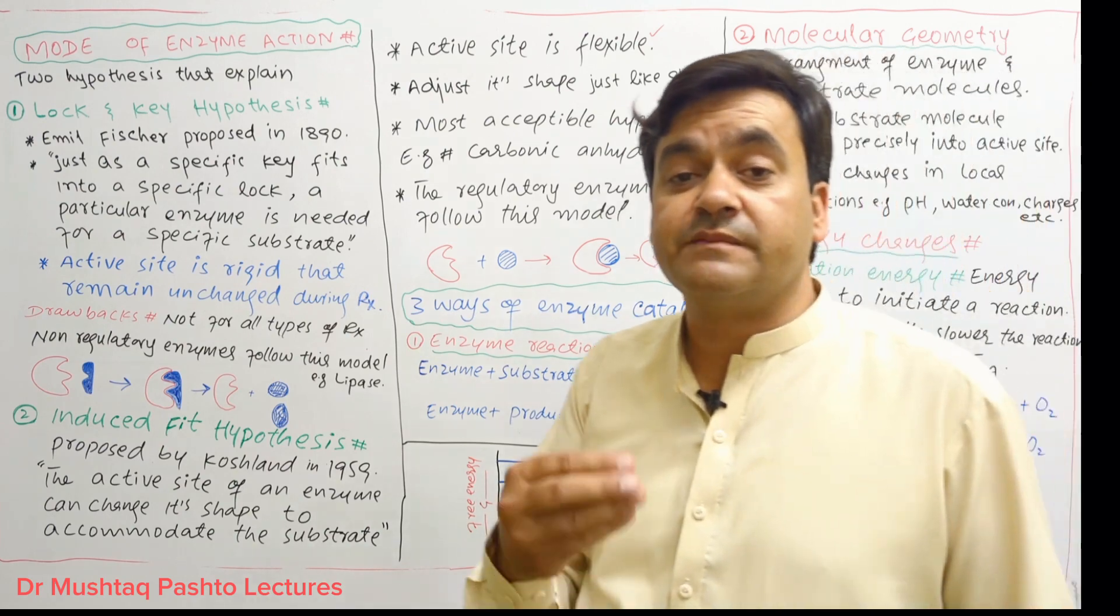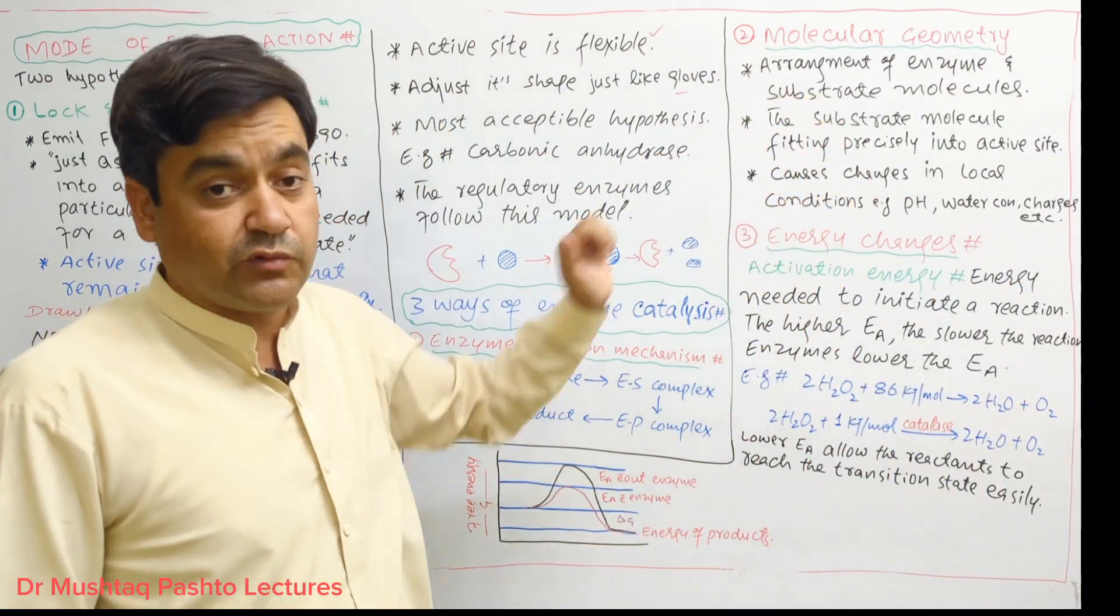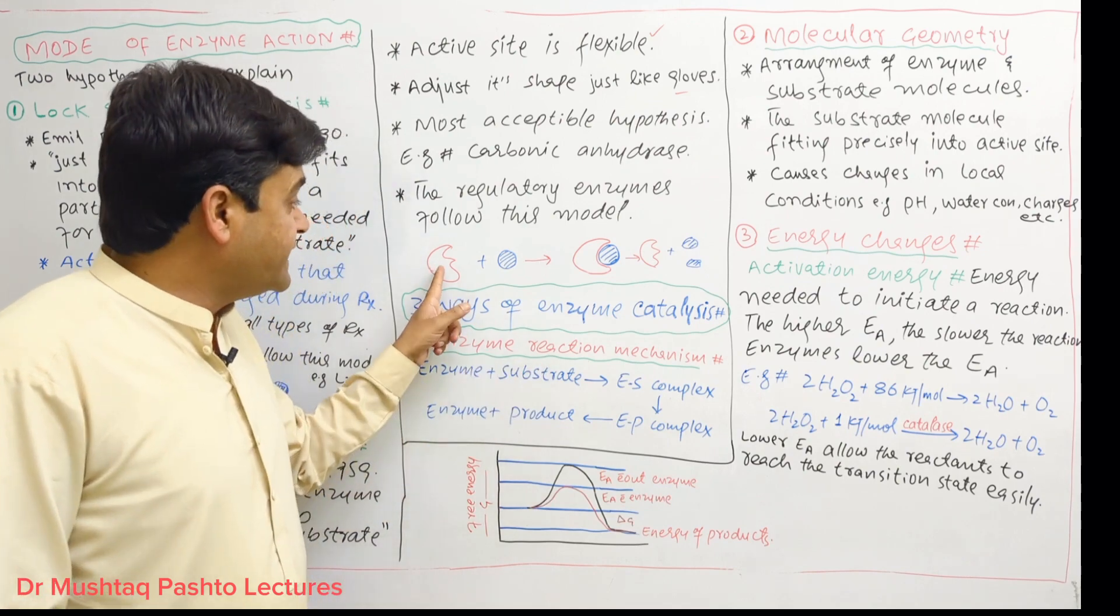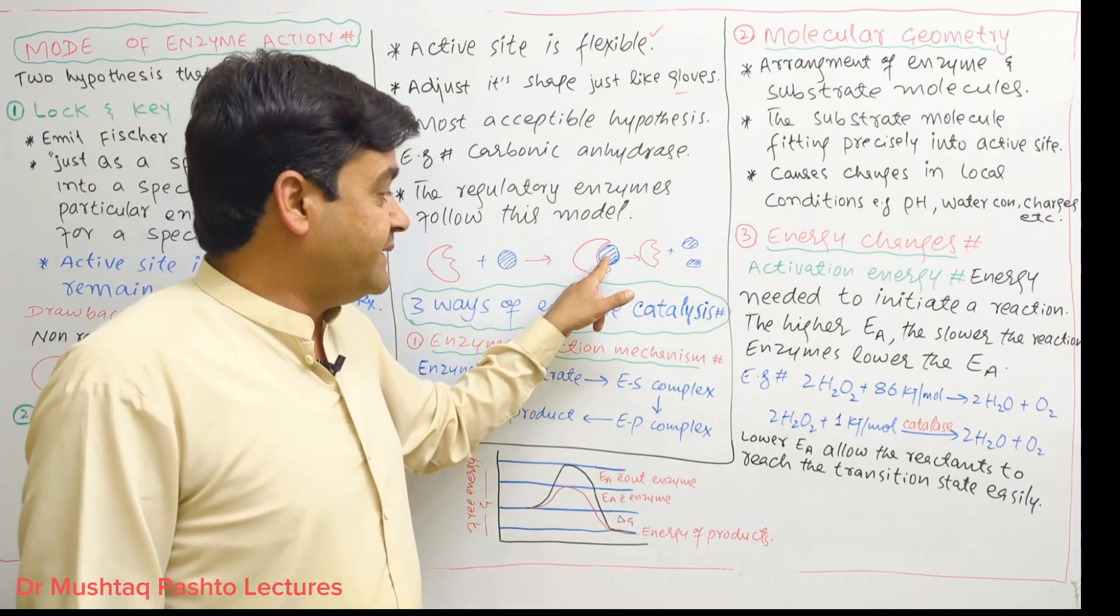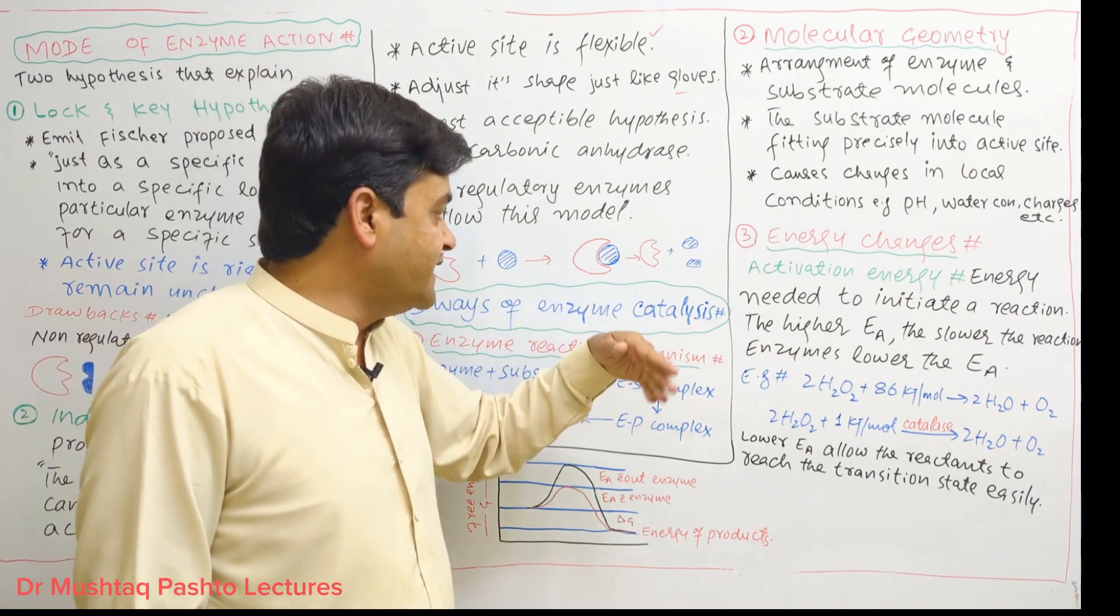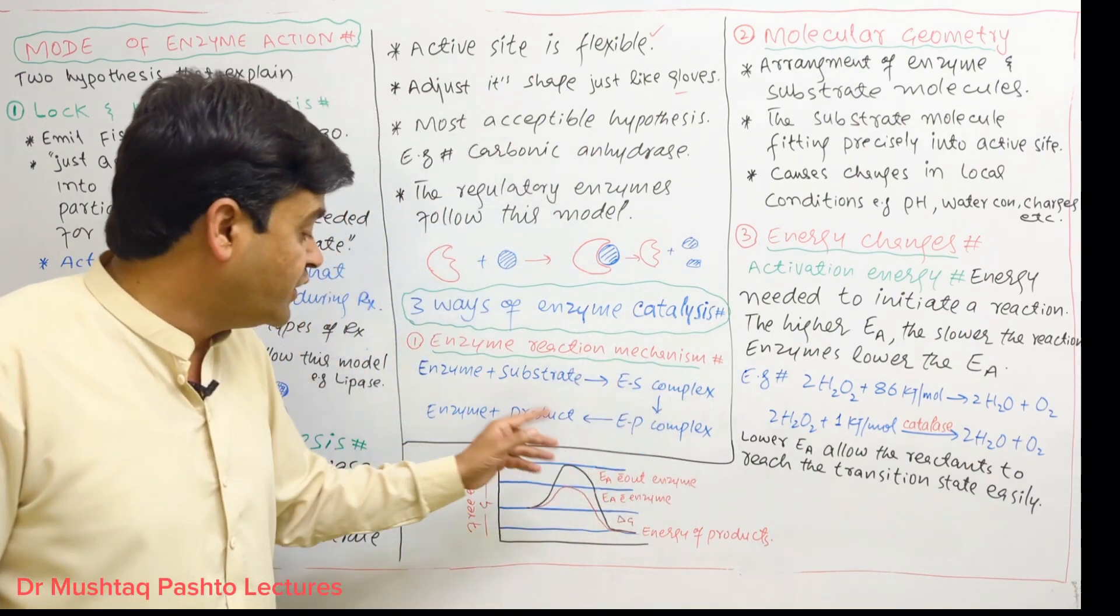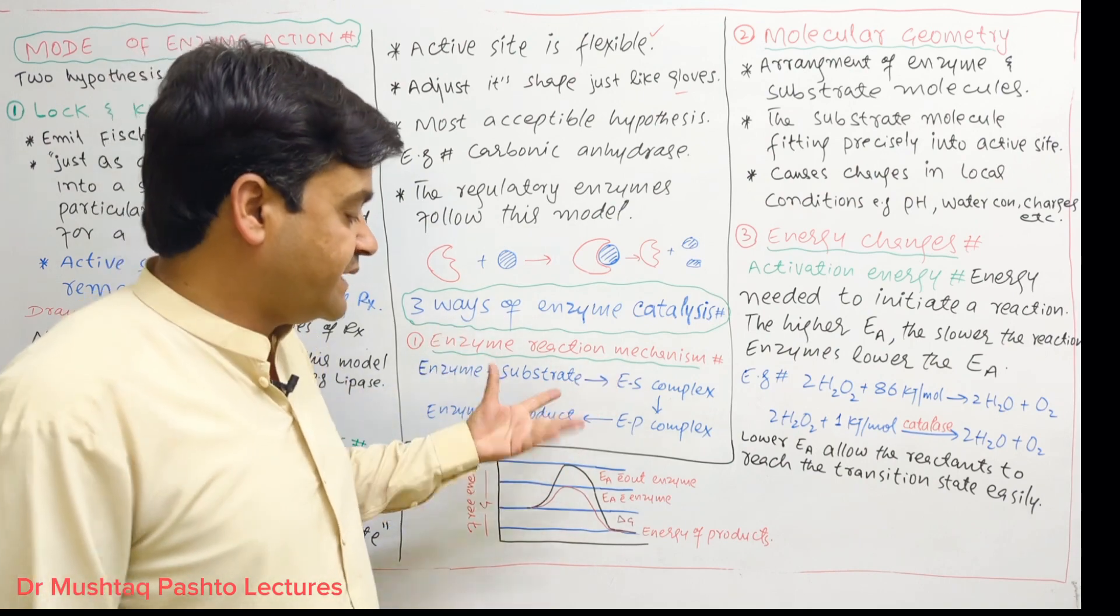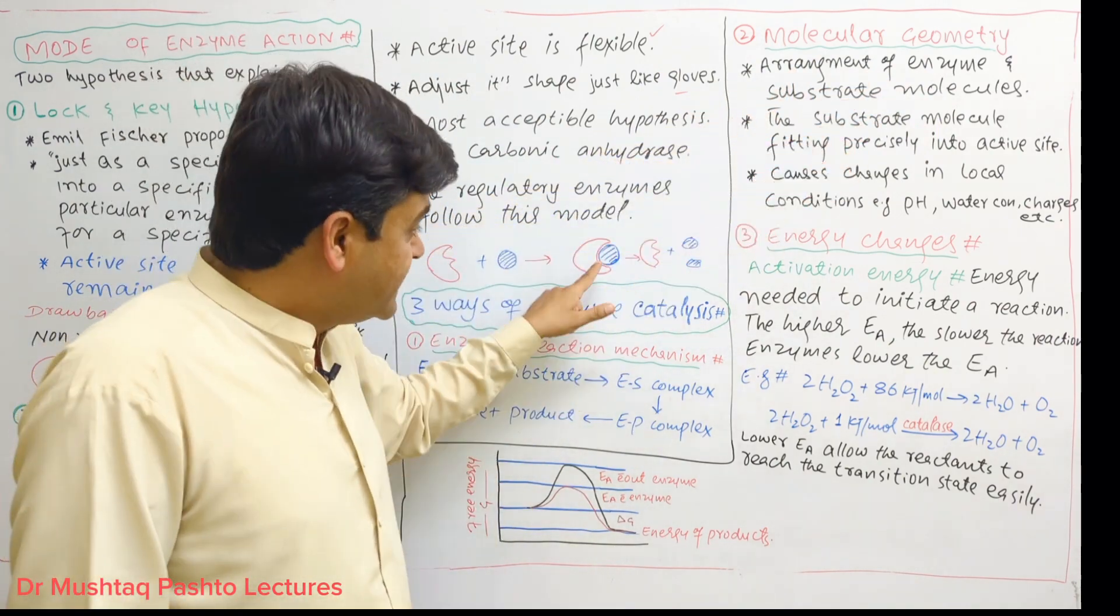There are three ways of enzyme catalysis. The headings are: activation energy, molecular geometry, and enzyme reaction mechanism. The enzyme reaction mechanism is simple: enzyme and substrate form enzyme-substrate complex, then this complex converts to product, and the product is released. The enzyme is recovered and the product is released from the reaction.